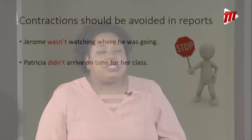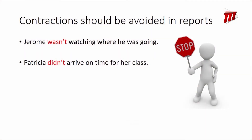Also, we want to avoid contractions. For example, 'Jerome wasn't watching where he was going' — that contraction is not suitable for a report. We want the full form: 'Jerome was not watching where he was going.' Similarly, 'Patricia didn't arrive on time for her class' should be written as 'Patricia did not arrive on time for her class.' We want to avoid contractions in our report.